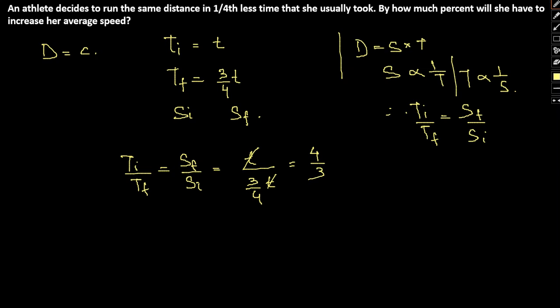That is, we can say Sf is 4 km per hour and Si is 3 km per hour. I'm just giving this a random unit. So how much increment do we see here from Si to Sf? We see an increase of 1. So 1 has been increased from 3, that is 1 by 3, which is nothing but 33.33%, which is our final answer.